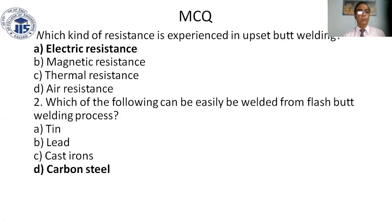Quiz questions: which kind of resistance is experienced in upset butt welding? Options: a) electric resistance, b) magnetic resistance, c) thermal resistance, d) air resistance. Answer: a — electric resistance, as welding is done by electric resistance. Second question: which of the following can be easily welded by flash welding? Options: a) steel, b) lead, c) cast iron, d) cargo. Answer: steel.